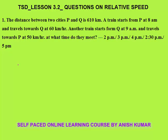First question: the distance between two cities P and Q is 610 kilometers. A train starts from P at 8 AM towards Q at 60 kilometers per hour. Another train starts from Q at 9 AM and travels towards P at 50 kilometers per hour. At what time do they meet?